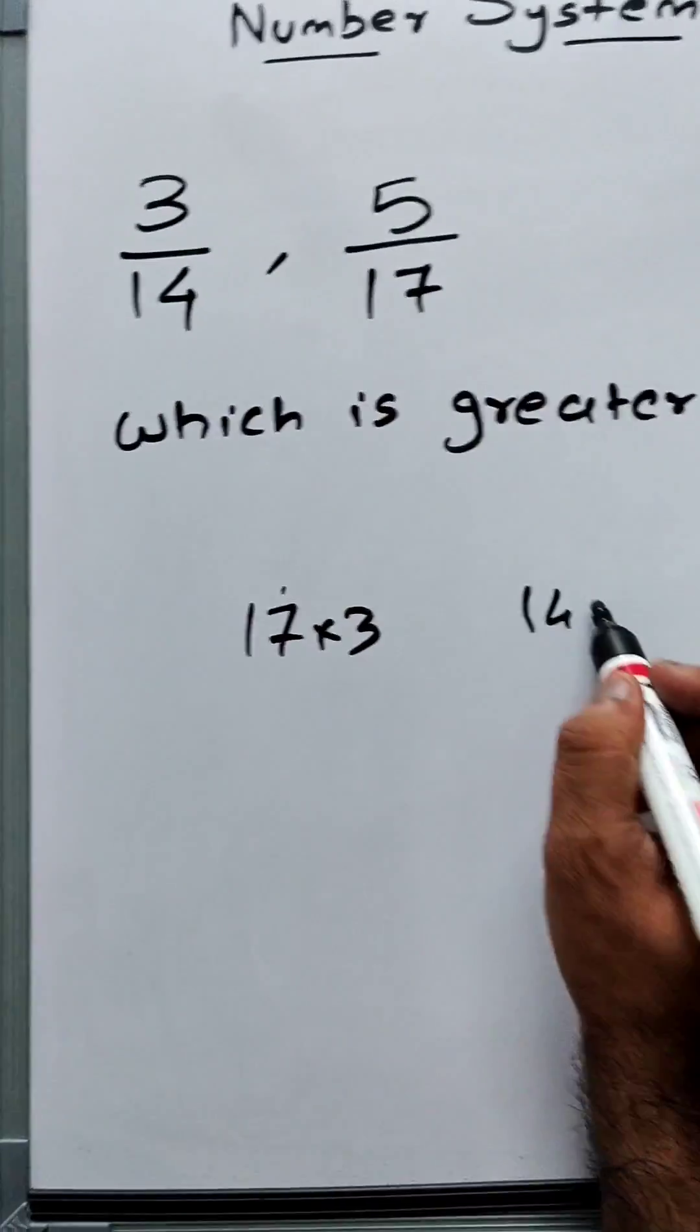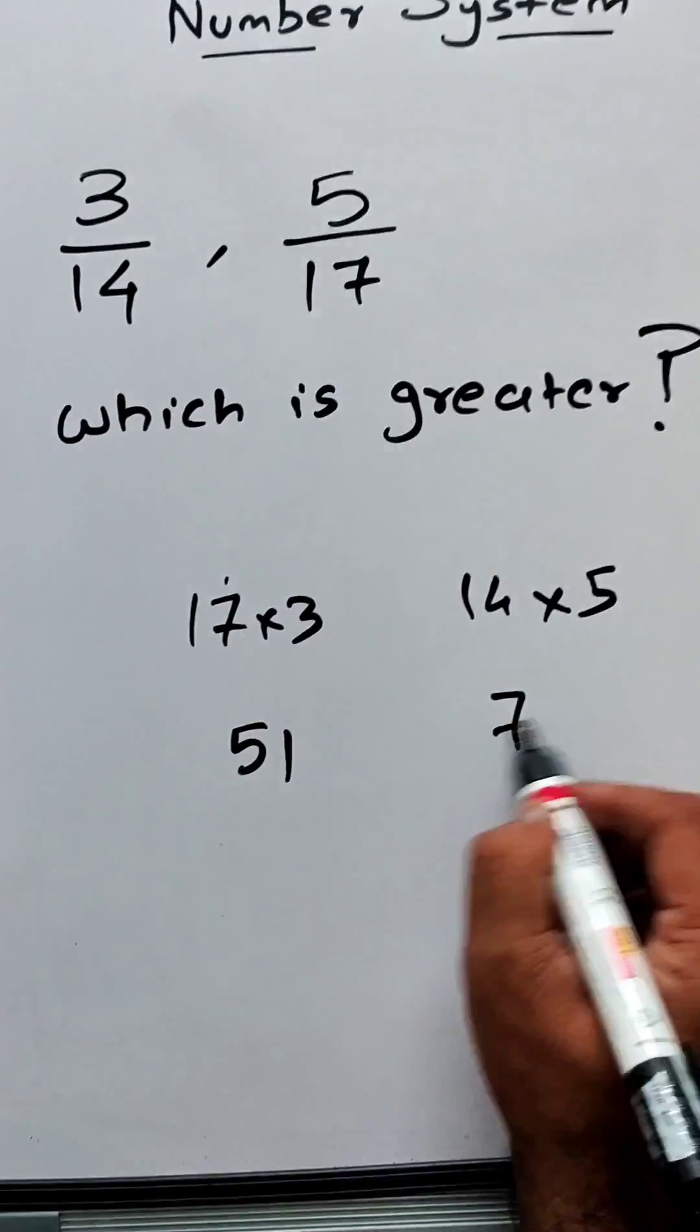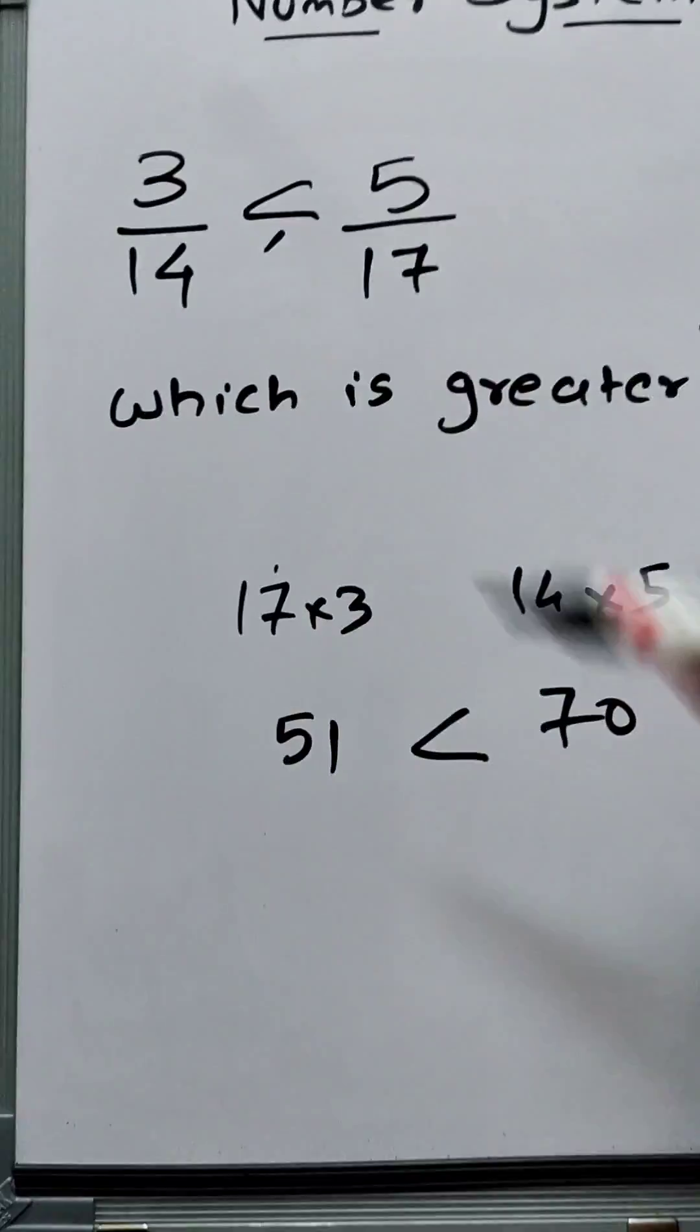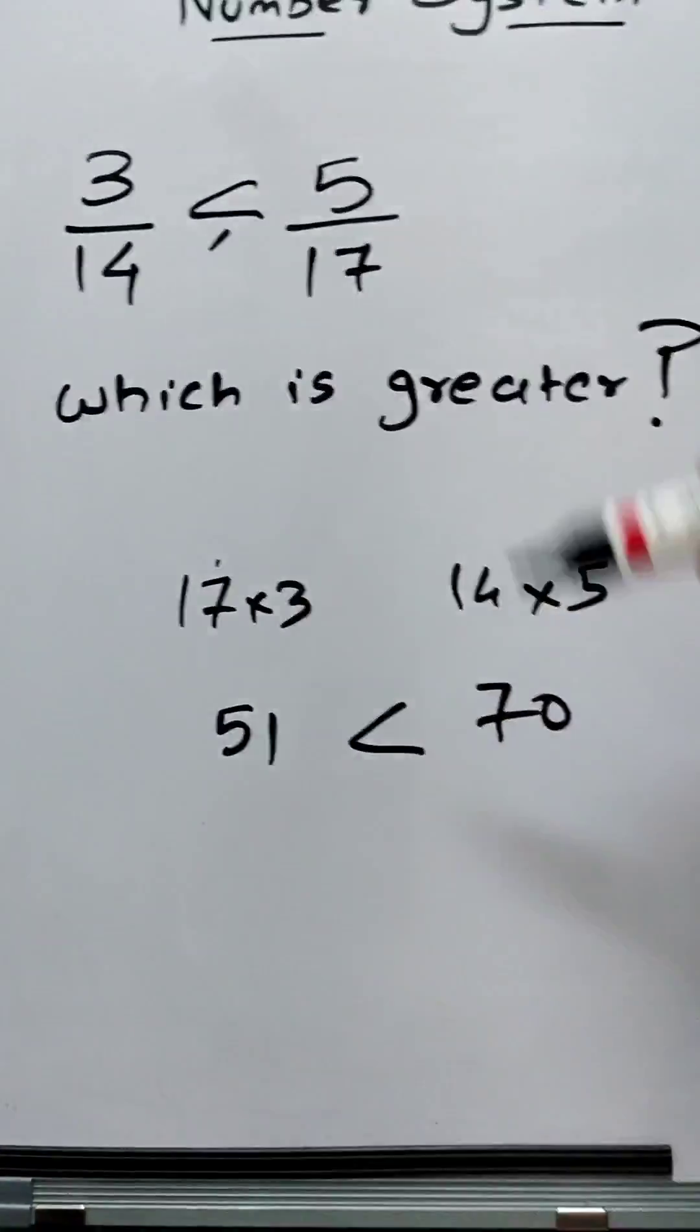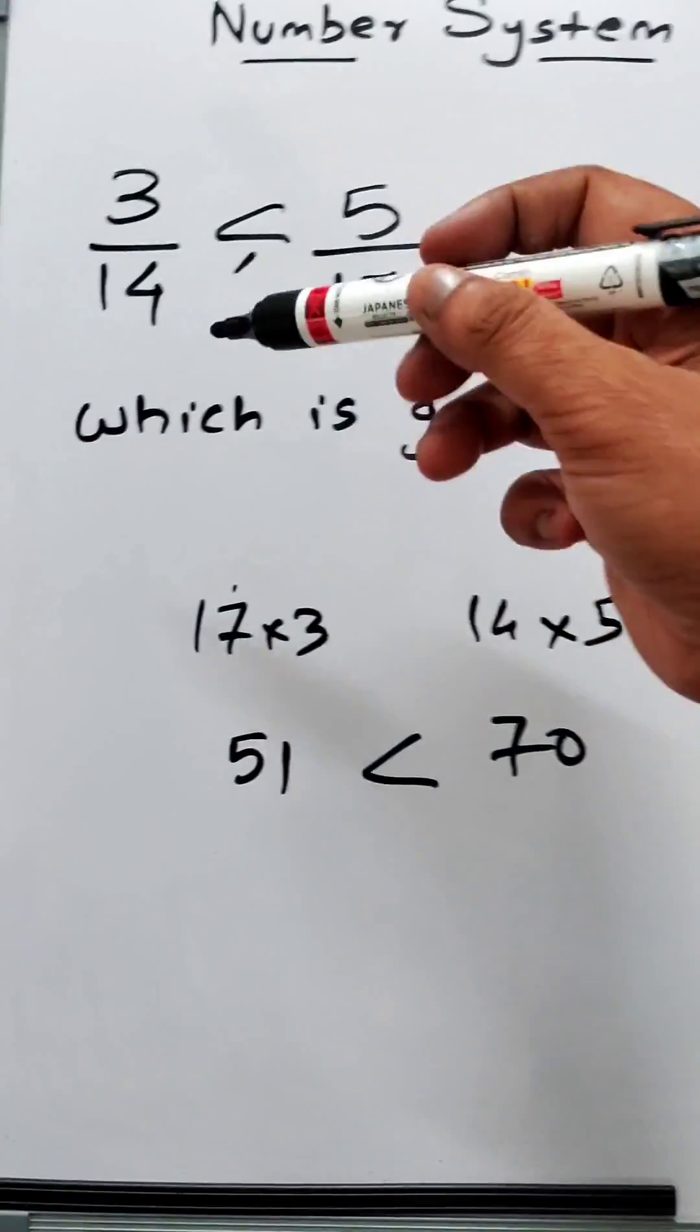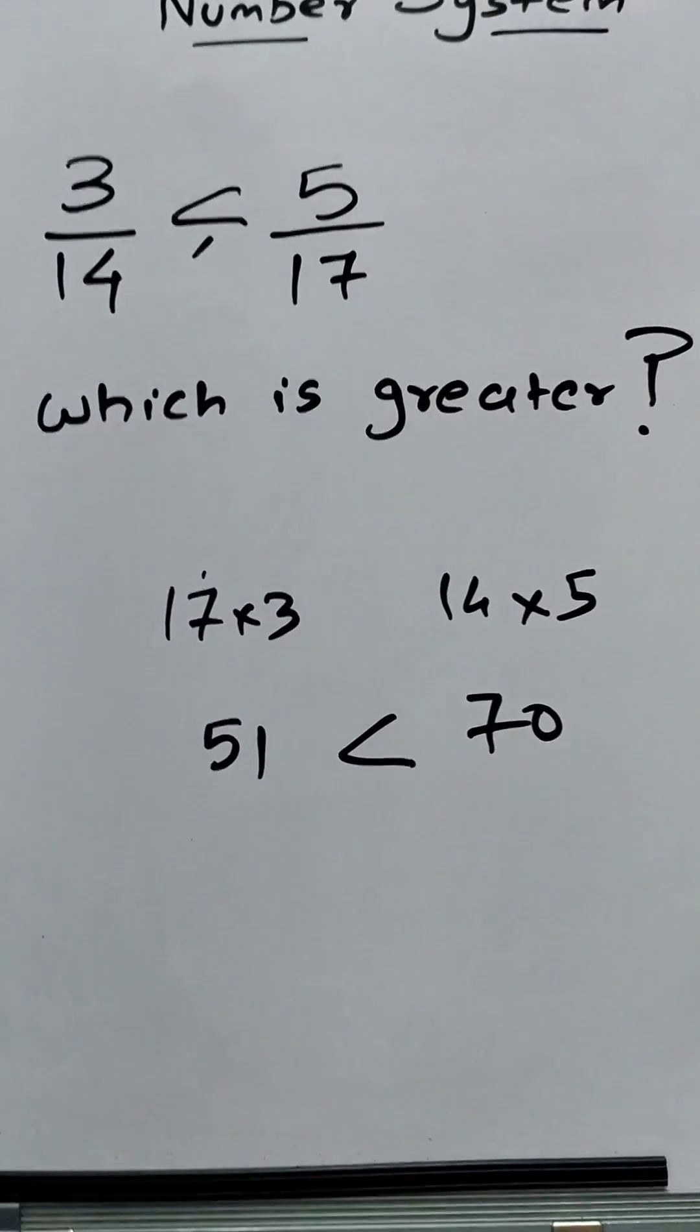This is 51, this is 70. Clearly this is greater, which means that this fraction is greater. We have to maintain the coherence in line, so clearly 5/17 is on the right-hand side. That is the greater one.